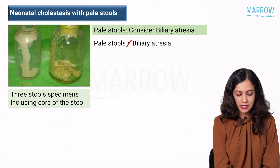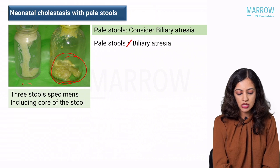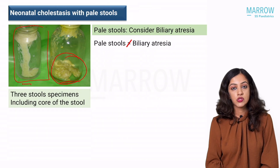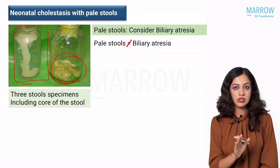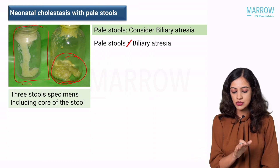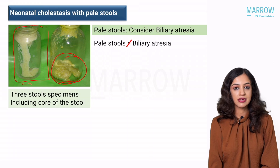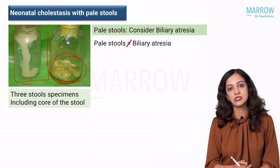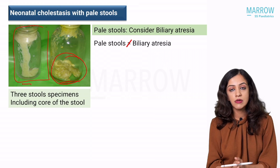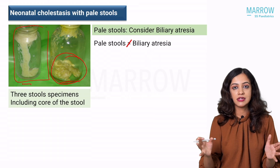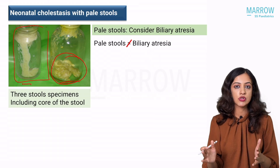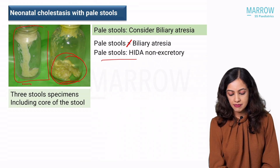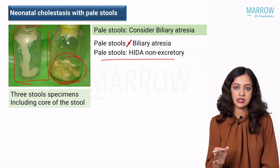You can see these two bottles here — this is a typical pigmented stool and this is a pale stool. So if there are pale stools, consider biliary atresia. But as I told you, pale stool is not equal to biliary atresia, because anything which prevents adequate bile drainage can cause pale stools. We are hammering on biliary atresia because this is a time-dependent disease — you have to send these babies for Kasai porto-enterostomy on time. Pale stools mean the HIDA scan is going to be non-excretory.